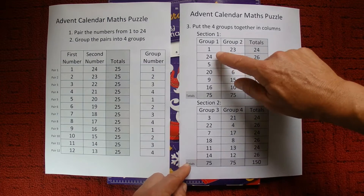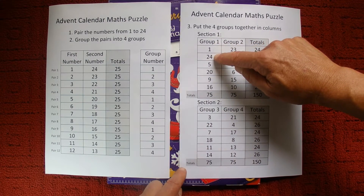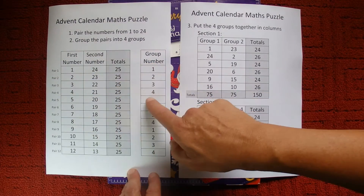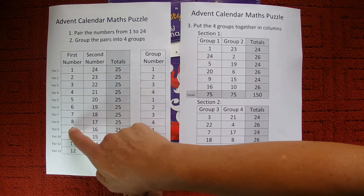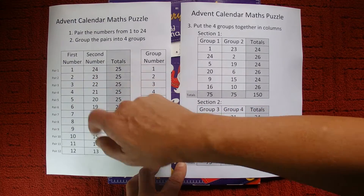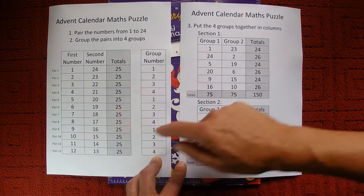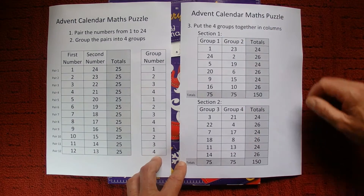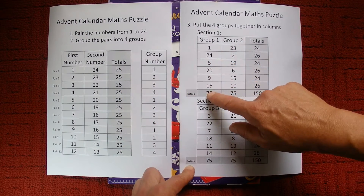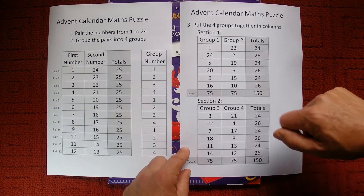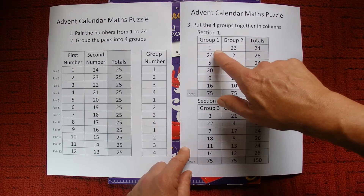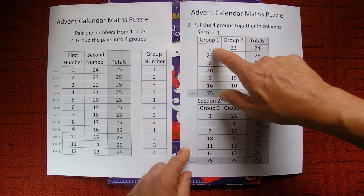Group one gives us 1, 24, 5, 20, 9, and 16, and that all adds to 75. You do the same for group two: 2, 23, 6, 19, 10, and 15 — those six numbers in the group two column. Because you've got three pairs of numbers that each add to 25, each group adds to 75. I've also rearranged the order of numbers within each pair so that the row totals alternate between 24 and 26.